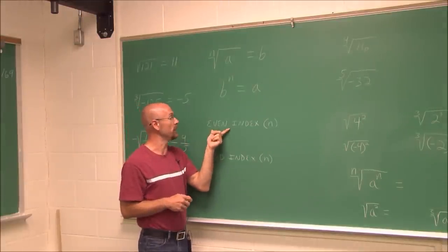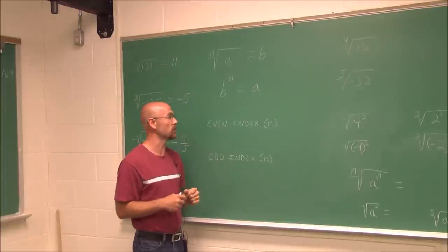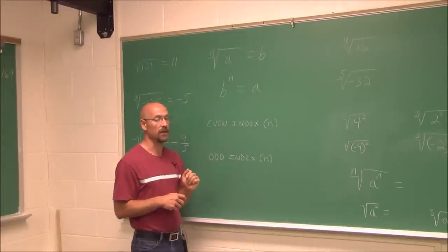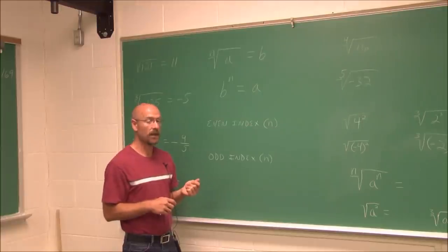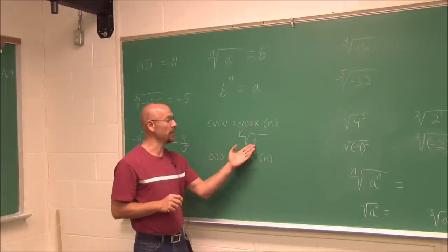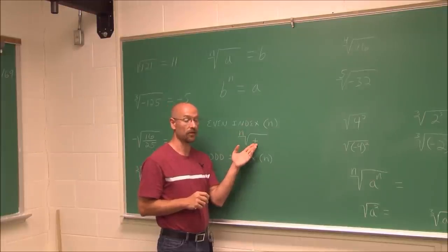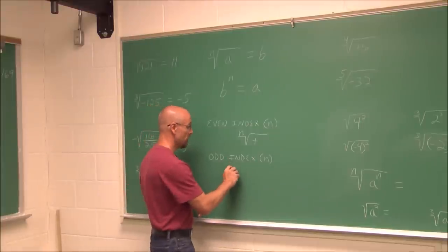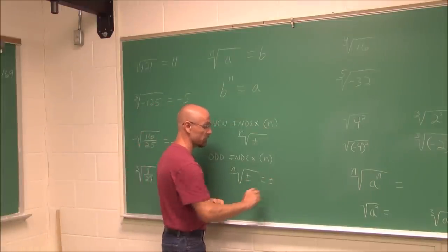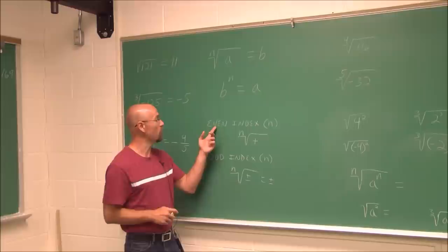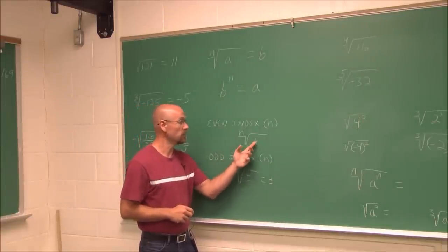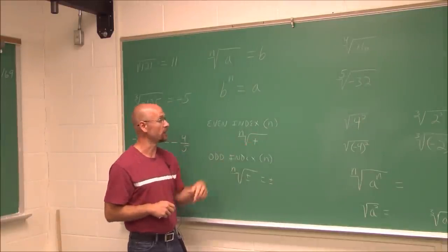Let's discuss even versus odd indexes in more detail. With an even index — square roots, 4th roots, 6th roots, and higher — the radicand must be a positive value; you cannot take the even root of a negative. With an odd index, the radicand can be positive or negative, and the result will match that sign. We need to watch even indexes carefully because radicands cannot be negative.